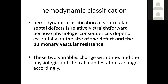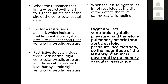Coming to hemodynamic classification: VSDs can be divided based on physiological consequences, which depend upon the size of the defect and pulmonary vascular resistance. These two variables change over time, and the physiological and clinical manifestations change accordingly. When resistance limits or restricts left-to-right shunt, we call it a restrictive defect, where left ventricular systolic pressure is higher than right ventricular systolic pressure, including those with normal RV pressure and those with elevated but less than systemic LV systolic pressure.